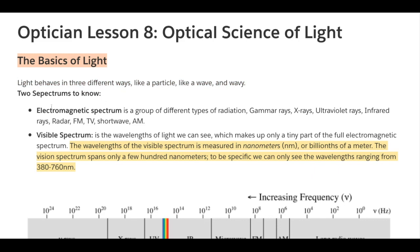Two spectrums to know are the electromagnetic spectrum, which is a group of different types of radiation — like gamma rays, x-rays, ultraviolet rays, infrared rays, radar, FM, TV, shortwave, AM — all of these are considered electromagnetic spectrum. The visible spectrum is the wavelengths of light we can see, which makes up only a tiny part of the full electromagnetic spectrum.